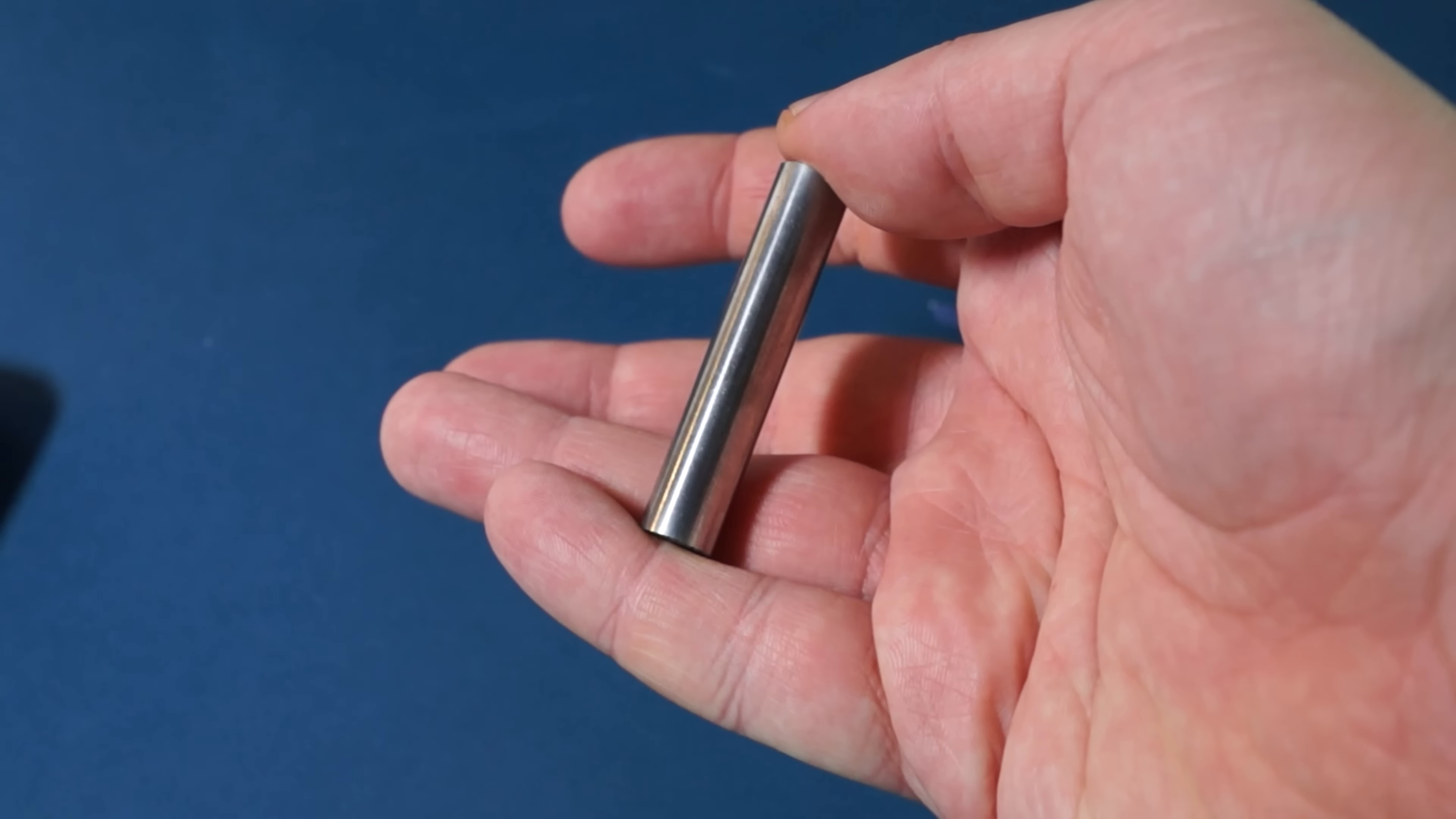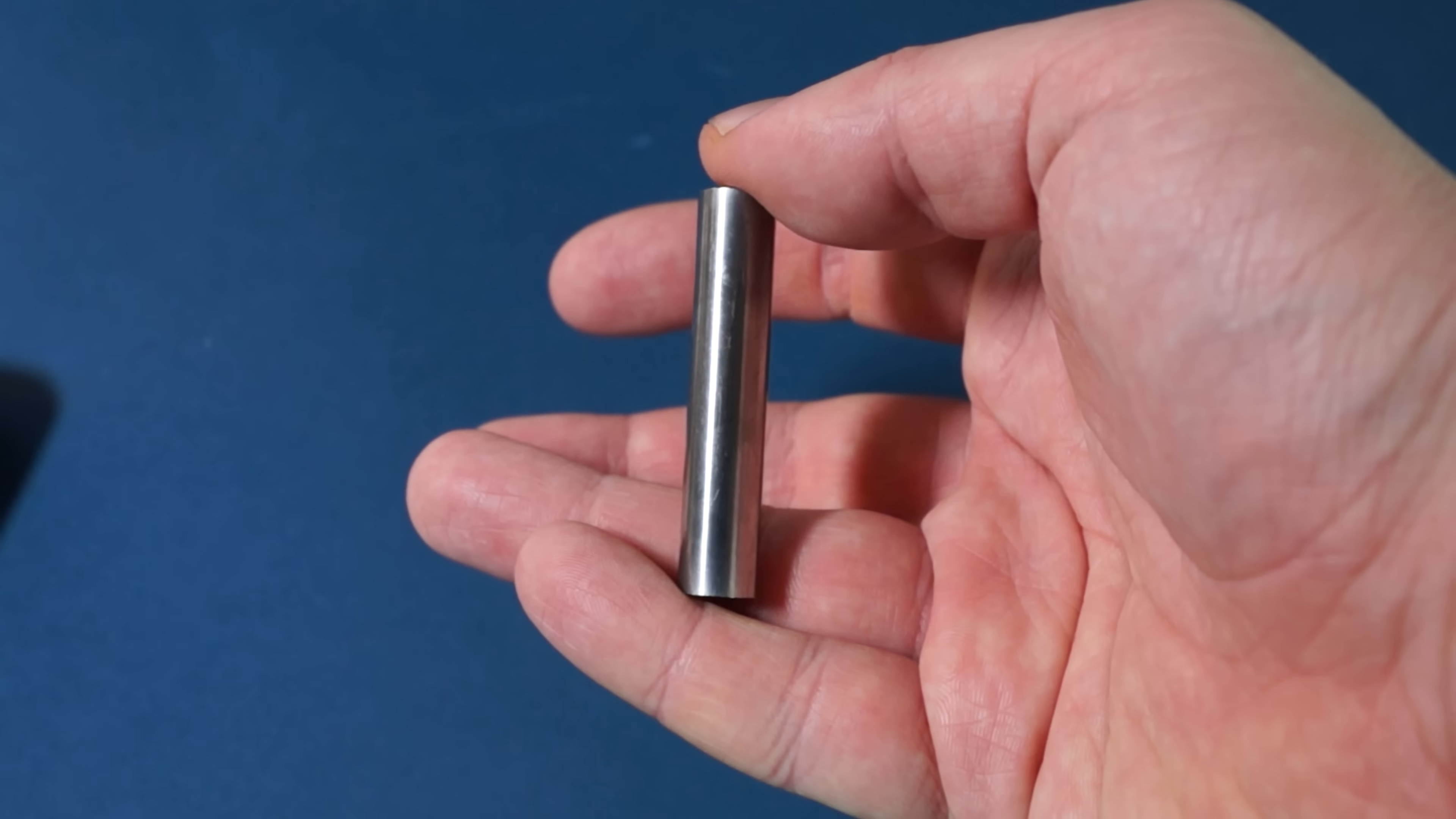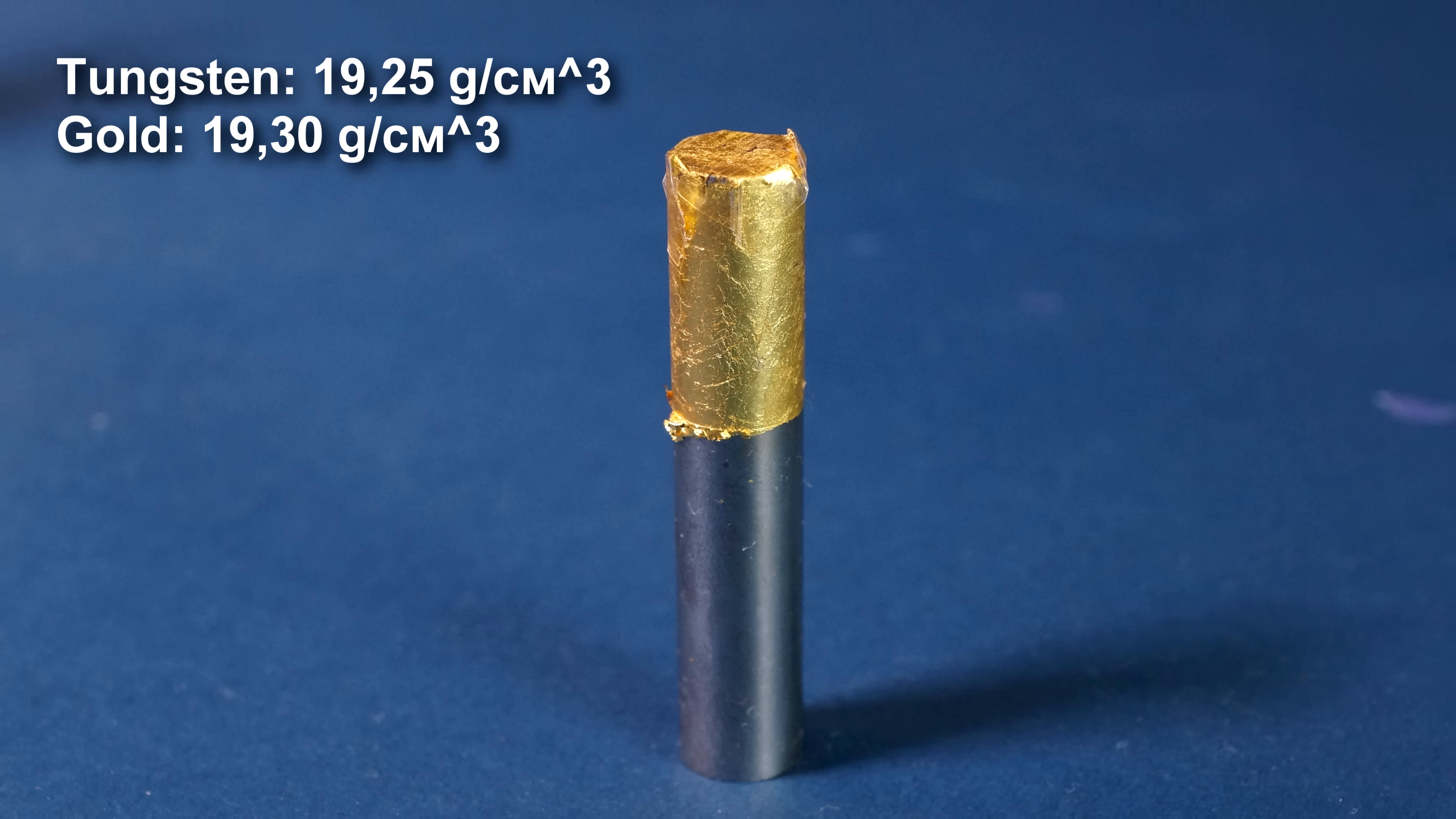If you hold a rod of tungsten in the hand, you may experience one special characteristic. The density of tungsten is almost 20 grams per cubic centimeter, which is very close to the density of gold.